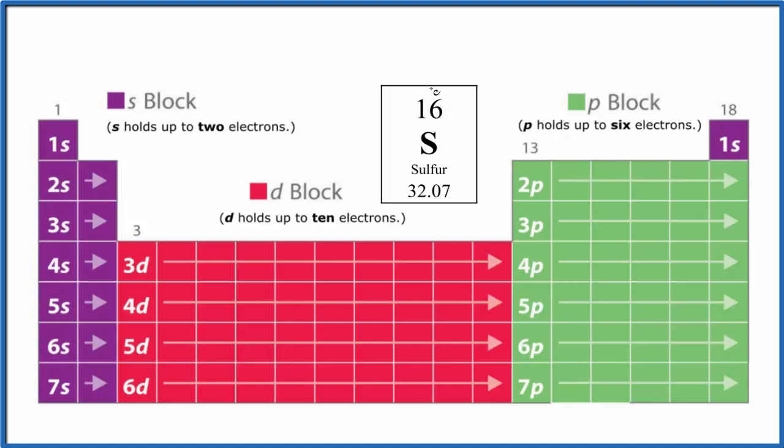Sulfur has an atomic number of 16. That means it has 16 protons. And since sulfur, like all of the elements on the periodic table, they're neutral, protons will equal electrons. So we have 16 electrons for sulfur.